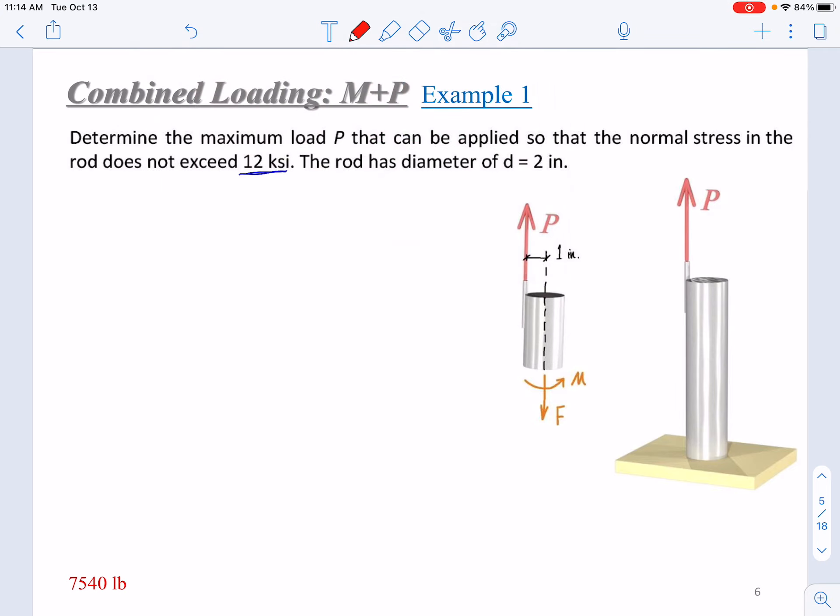Let's summarize that. We're determining P max. This will be limited by the maximum or allowable stress, that is 12 ksi. This stress induced by P equals the combination of F over A plus or minus Mc over I. This has to be no larger than 12 ksi.